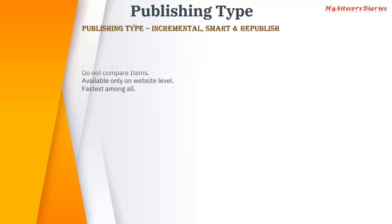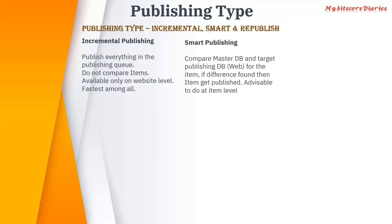There are three publishing types: incremental, smart, and republish. Smart publish compares the master database and your target database. So assume we have a target database called 'web' — it compares the master DB and web DB for that item, and if there is any difference found, that item gets published; otherwise it doesn't get published.